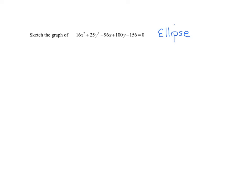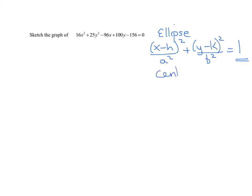We're going to have to complete the square to make sure. Remember the equation of an ellipse looks like: x minus h, all squared, over a squared, plus y minus k, all squared, over b squared, equals one. We need a positive one on the right-hand side. The center is at (h, k) — the opposite of the numbers shown. Then a tells you how far to go left and right, and b tells you how far to go up and down from the center.